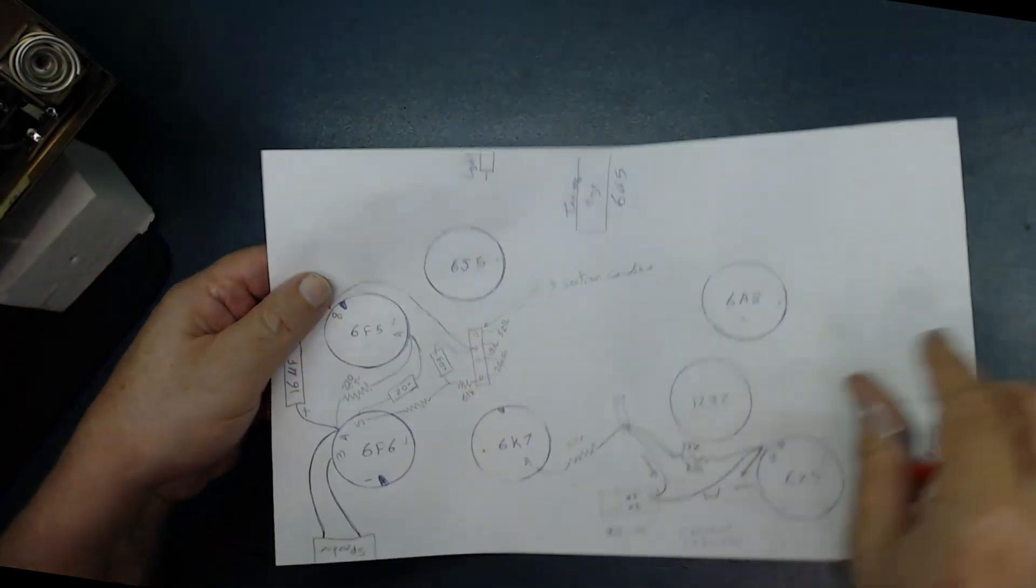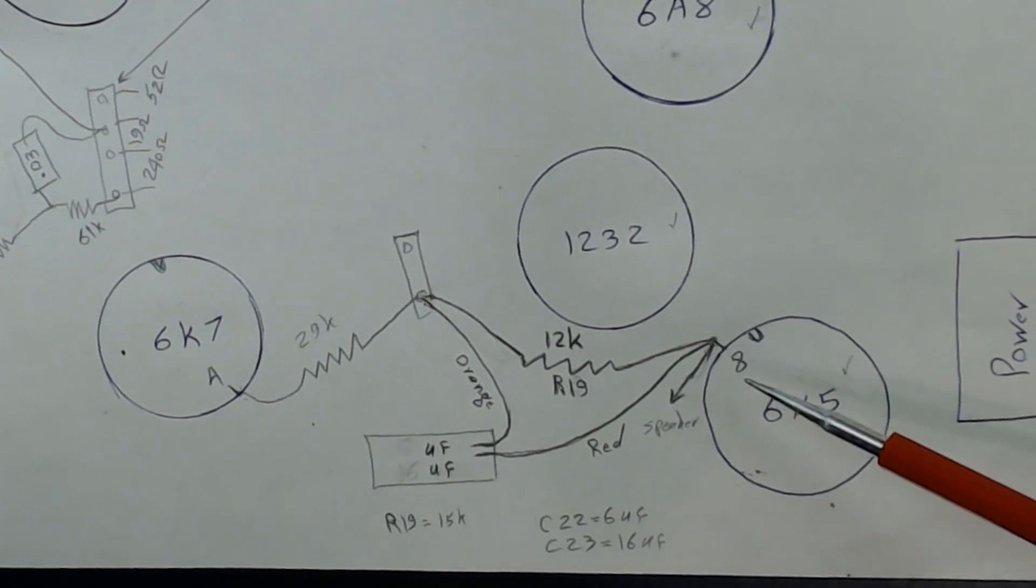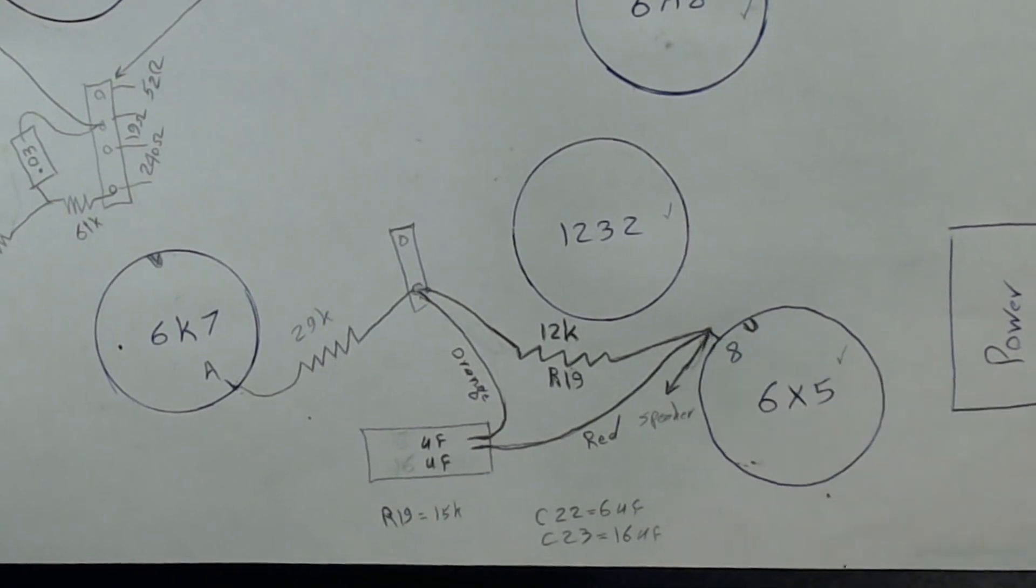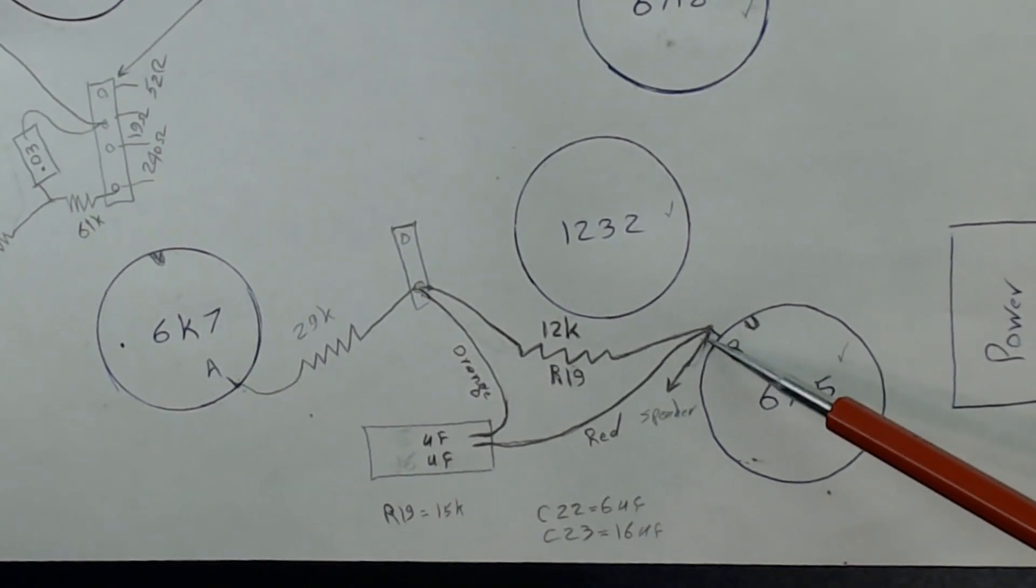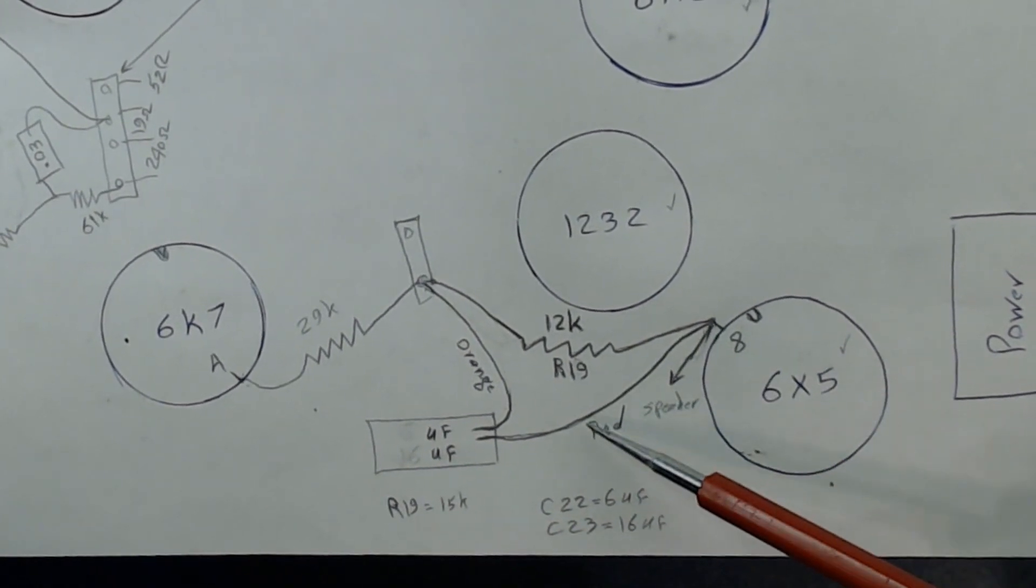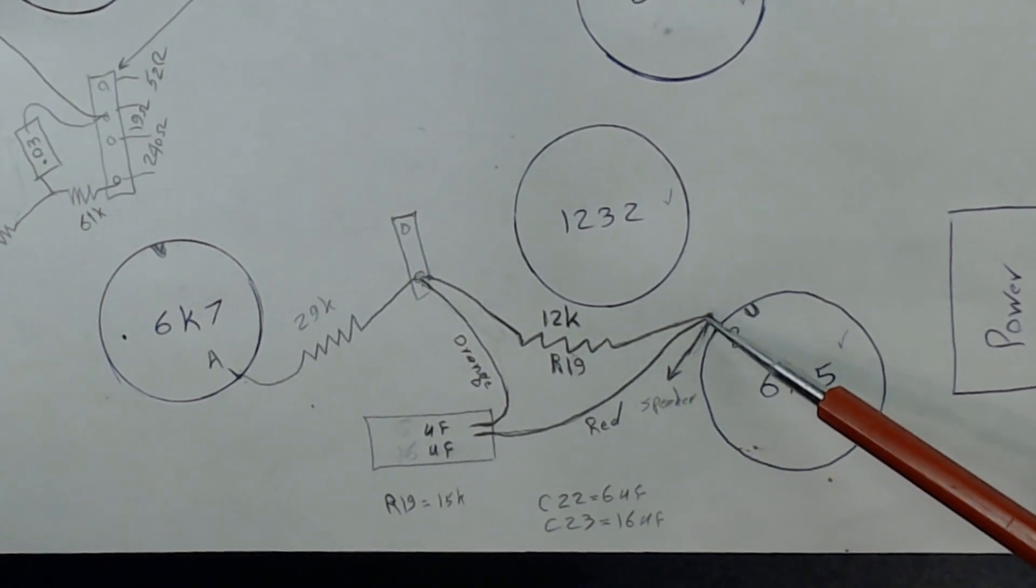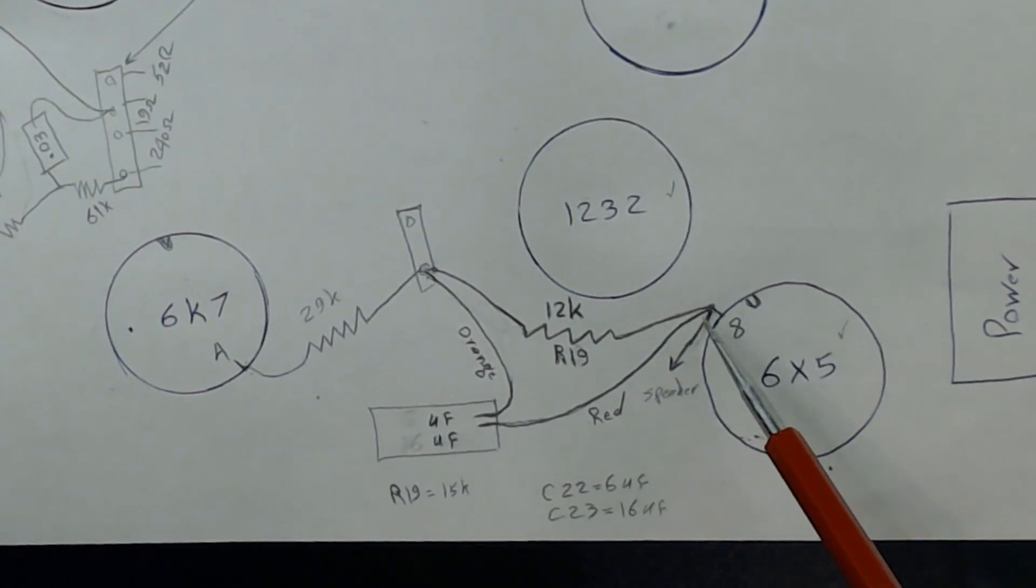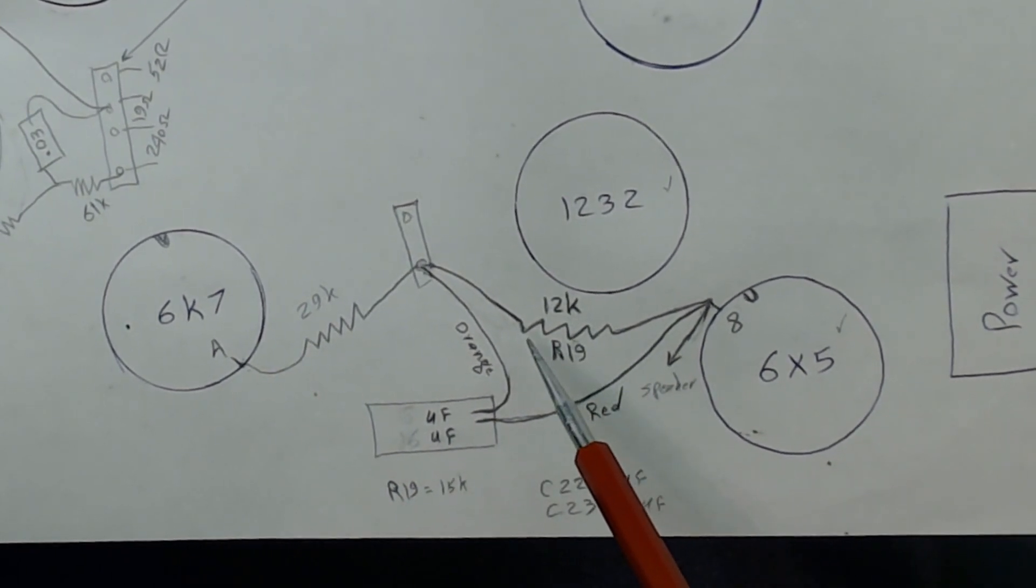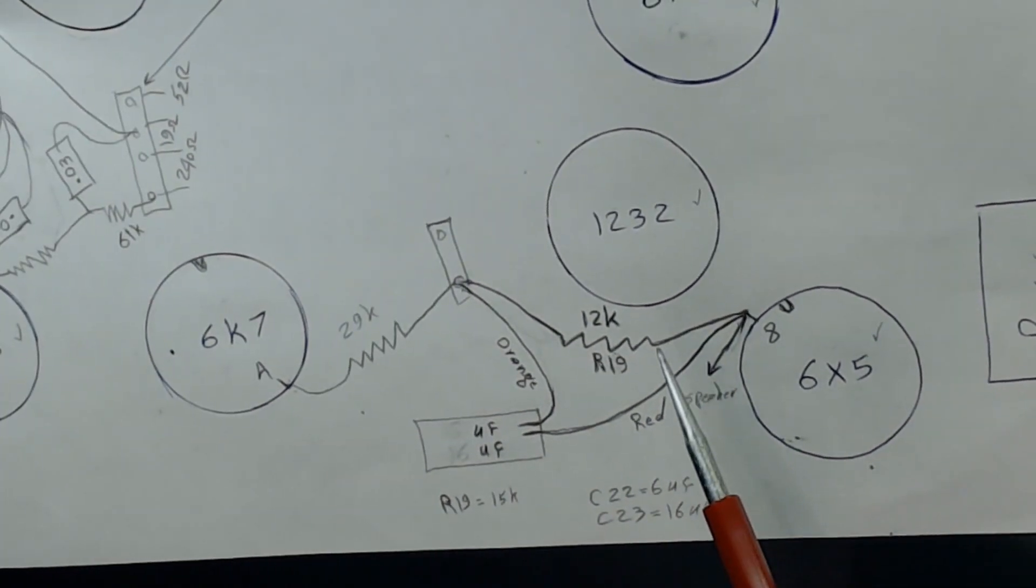Then I can look under the chassis. When you're looking under the chassis on pin 8 of 6X5, there's three connections. One goes to the speaker, the red wire from the electrolytic capacitor is hooked up to it, and there's a resistor R19, about 12K, soldered to pin 8.